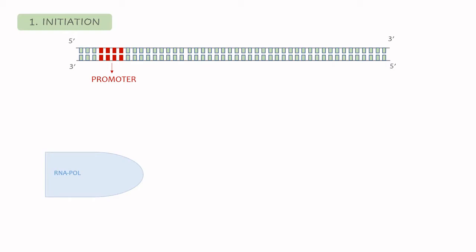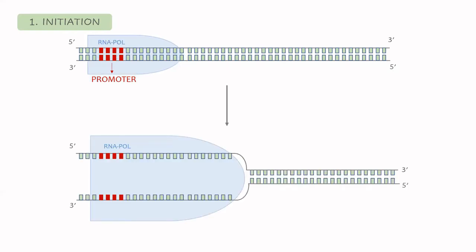In the initiation process, the RNA polymerase detects and recognizes these sequences in the promoter and is able to bind it — it attaches to the DNA. When it attaches, it creates a kind of pressure and is able to break all the interactions between the complementary bases and create an opening, separating both strands of the DNA.